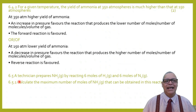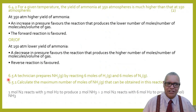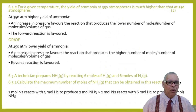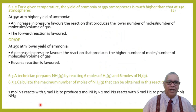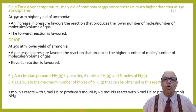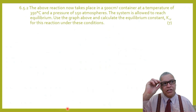Question 6.5: a technician reacts 6 moles of H₂ with 6 moles of N₂. Calculate the maximum number of moles of ammonia that can be produced. According to the balanced equation, 1 mol N₂ reacts with 3 mol H₂ to produce 2 mol NH₃. Therefore, 2 mol N₂ will react with 6 mol H₂ to produce 4 mol NH₃. The maximum number of moles of ammonia is 4 moles.